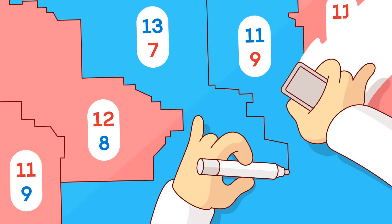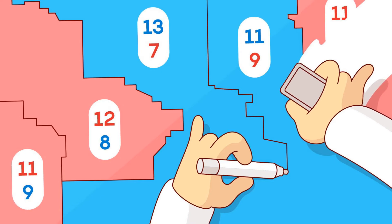Now imagine your opponent has the power to deploy your troops as well as their own. Even if you get more troops, you can't win. In the war of politics, this power to deploy forces comes from gerrymandering, the age-old practice of manipulating voting districts for partisan gain.